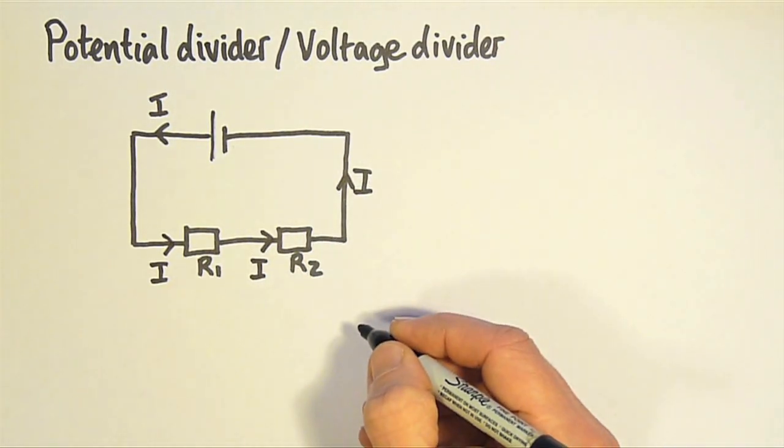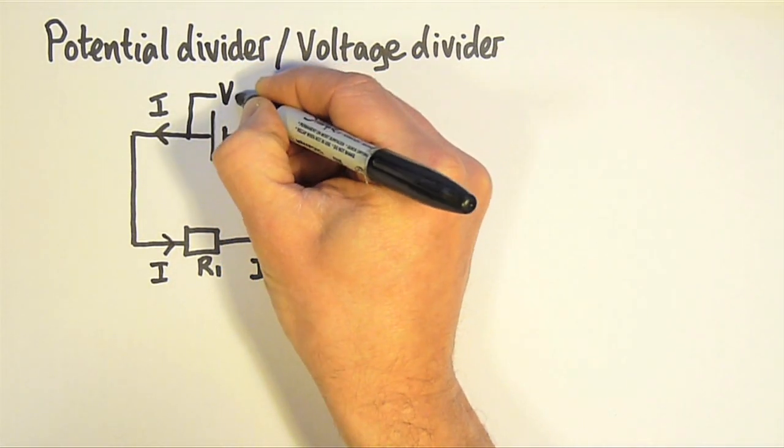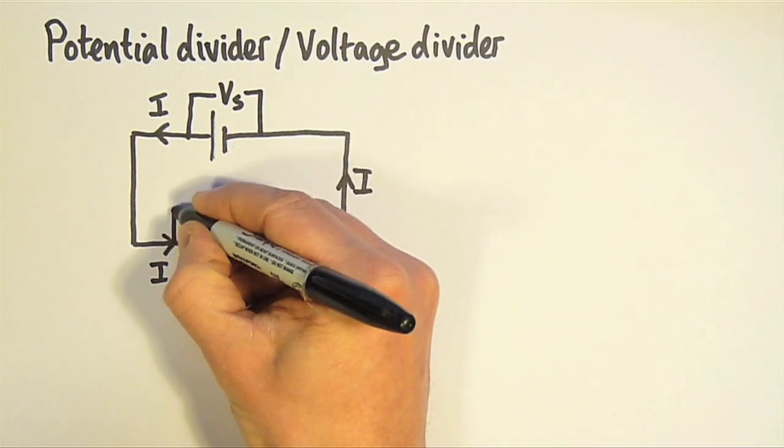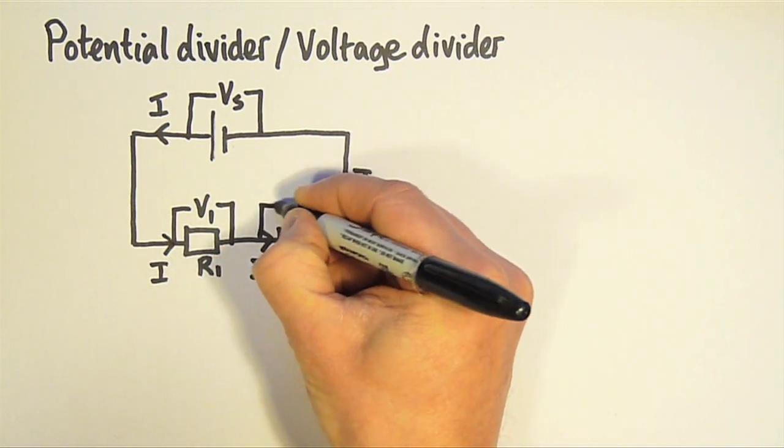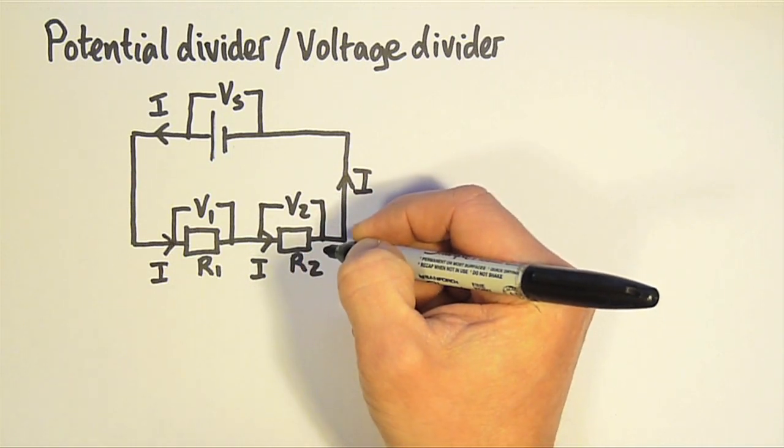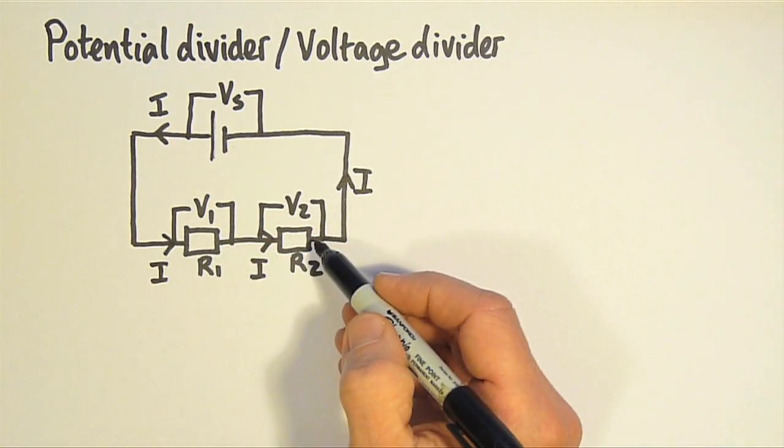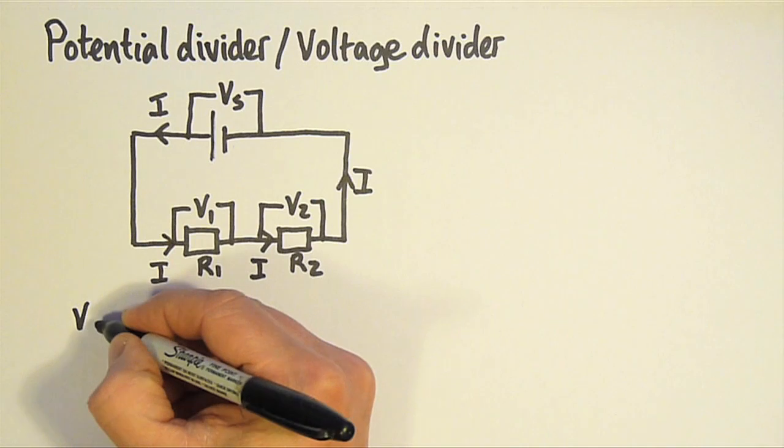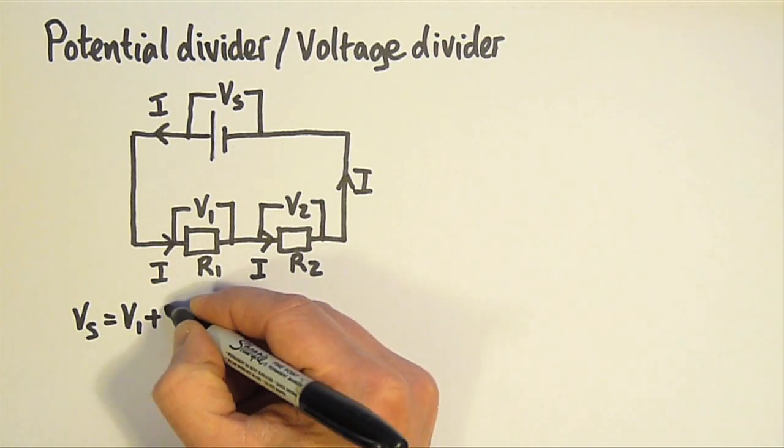And now the voltage. The voltage of the supply I'll call Vs. The voltage across R1, I'll call V1, and V2 for the voltage across R2. We know for a series circuit that the voltages of the components add up to the voltage of the supply. So Vs is equal to V1 plus V2.